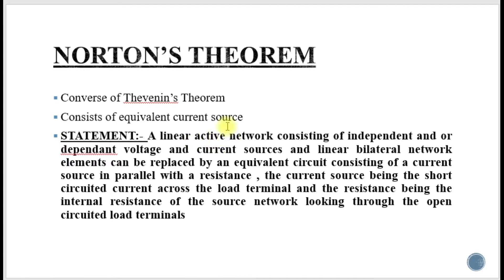There are some key terms. An active network consists of at least one voltage source or current source that can supply energy to the network indefinitely. A linear network is a network that exhibits constant parameters — that is, resistance and inductance — and these parameters cannot change with changes in voltage or current. A bilateral network is one in which the relation between current and voltage does not change in either direction of the network.